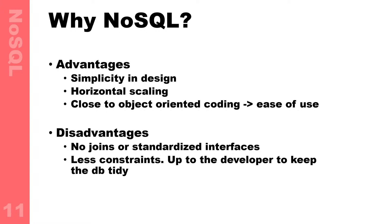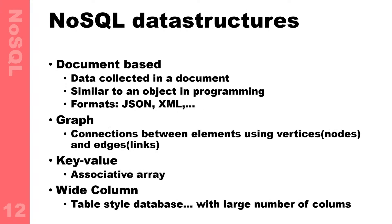NoSQL is more loosely structured, but that just means it's up to the developer to keep the database tidy. You have to make sure you're not making a mess of it — which will happen by the way. So what types of data structures does NoSQL have? NoSQL is a collection name for different approaches, and there are different ways of working with the data.